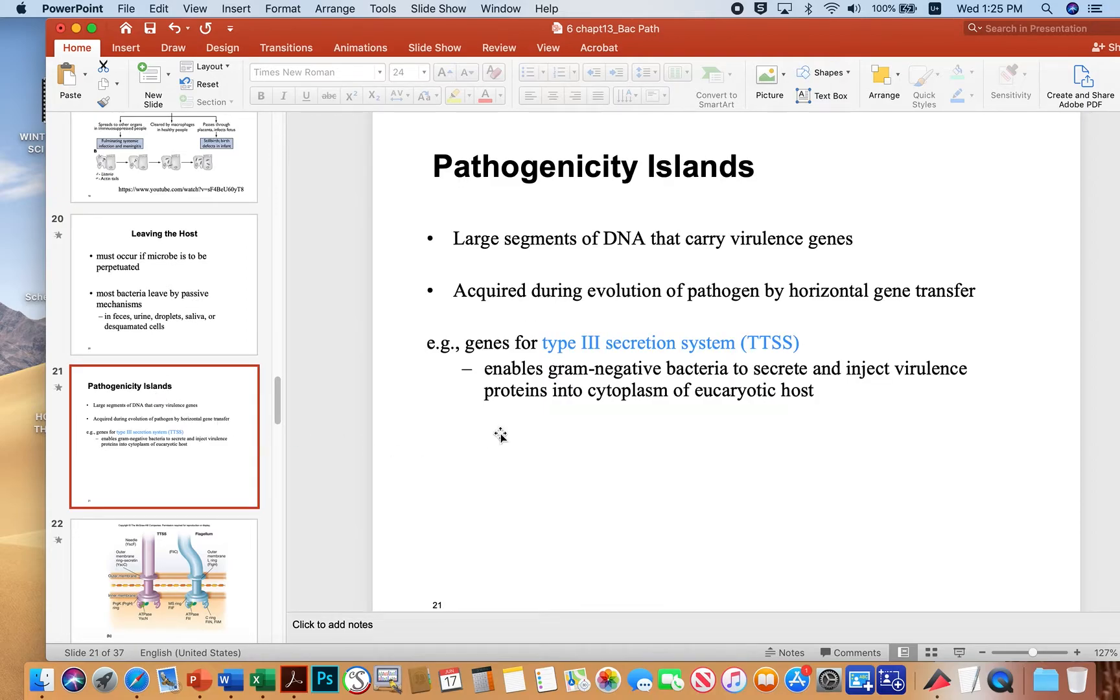A lot of microbes produce pathogenicity islands, and these are hunks of DNA that carry large groups of virulence genes typically. And usually they're acquired by horizontal gene transfer.